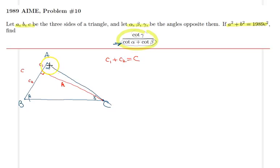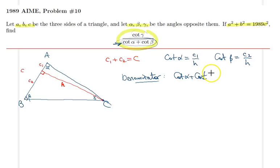Therefore, the cotangent of alpha and beta: cotangent alpha is simply equal to c1 over h, and similarly cotangent beta is c2 over h in that right triangle. As a result, it's not difficult to find this denominator. The denominator is cotangent alpha plus cotangent beta, which is c1/h + c2/h. But c1 + c2 is just c, therefore it is c over h.